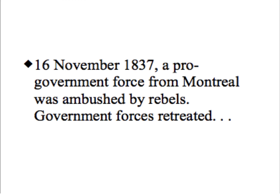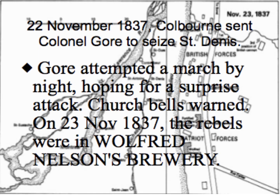On the 16th of November, a pro-government force was ambushed by the rebels, which forced the government forces to retreat. On the 22nd of November, Colborne sent a colonel to seize the Church of Saint Denis. As Gore attempted a march at night hoping to catch the rebels — the Patriots — by surprise, church bells were rung to warn the rebels of the incoming attack.